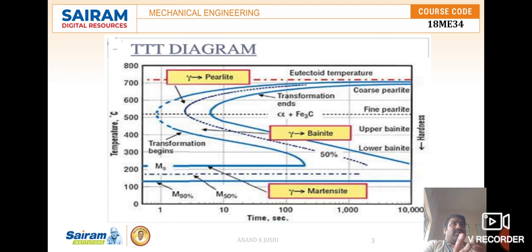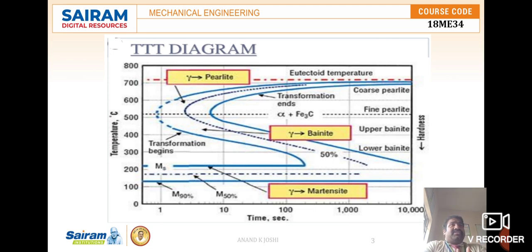Let us discuss how the TTT diagram is constructed. There are certain steps to obtain the diagram. First, a number of small specimens of steel are cut from the same bar and prepared according to the test conditions. Second, the same samples are heated in a furnace at a temperature above the critical temperature — around 720 to 730 degrees centigrade — at which austenite is stable and a complete austenite phase is formed in the microstructure, which can be observed at the microscopic level.